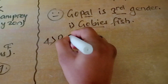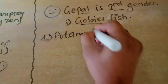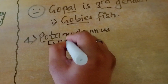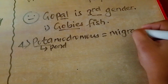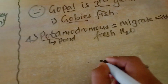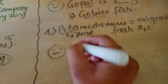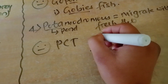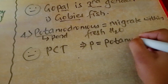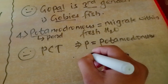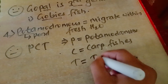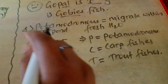The fourth type of migration is potamodromous. 'Potamo' means pond or fresh water — so potamodromous fish migrate within fresh water only. For the example, use the trick PCT: P for potamodromous, C for carp fish, and T for trout fish. So carp and trout are examples of potamodromous fish.